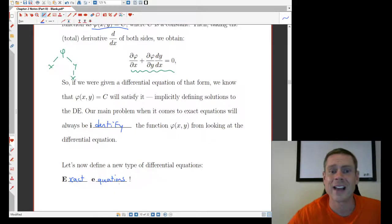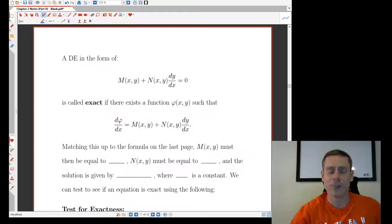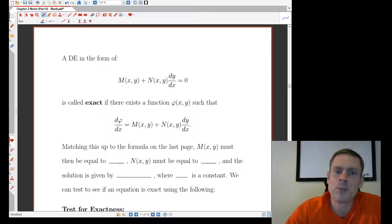So we're going to define what an exact DE is here. And it's this. So a DE in the form of, we're going to be using M's and N's because that's just what people do here. So we have M of x, y, so a function of x and y, plus N of x, y, dy/dx equals 0.